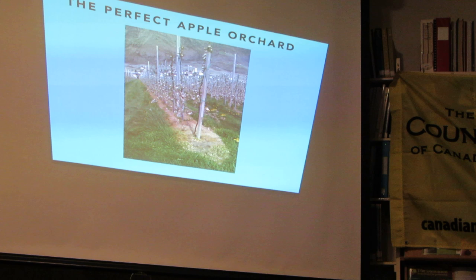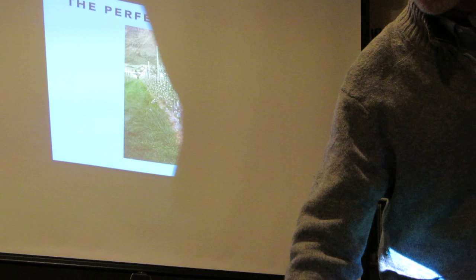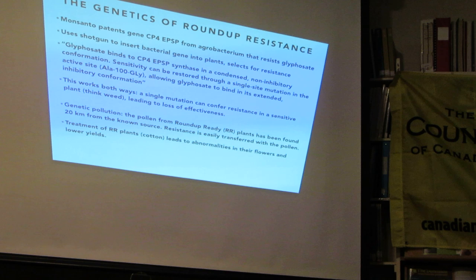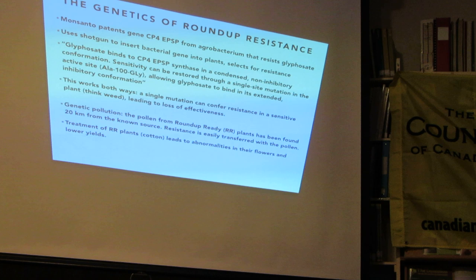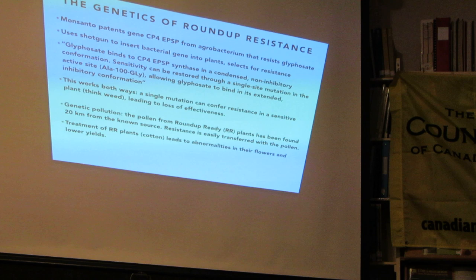Roundup was the start of it — it was invented by a chemist at Monsanto. Any plant can theoretically become resistant with one single base change; there are thousands of bases in the gene for that enzyme. Plants are naturally sensitive, but to get resistance you need to change just one amino acid — one amino acid corresponds to one base pair. Out of millions and millions of base pairs, one change can make a plant resistant.